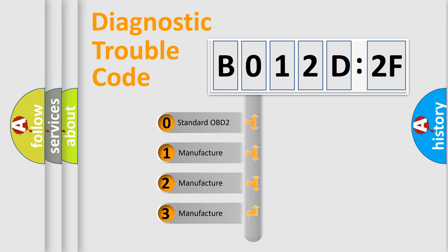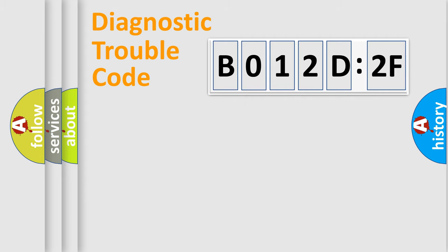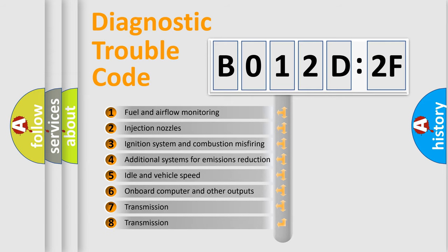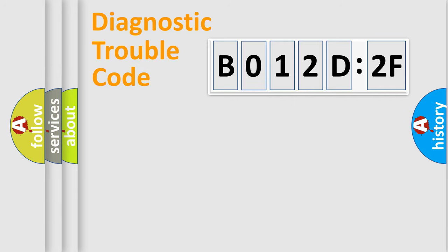If the second character is expressed as 0, it is a standardized error. In the case of numbers 1, 2, or 3, it is a more prestigious expression of the car-specific error. The third character specifies a subset of errors. The distribution shown is valid only for the standardized DTC code. Only the last two characters define the specific fault of the group.